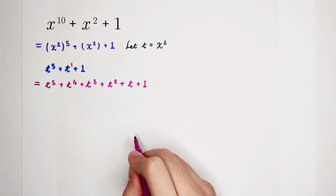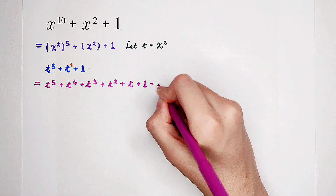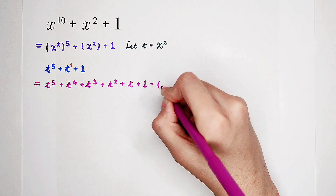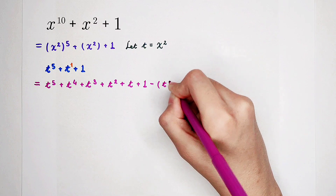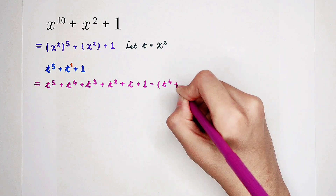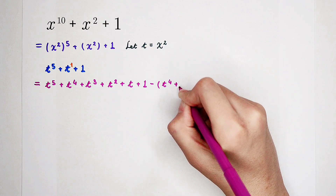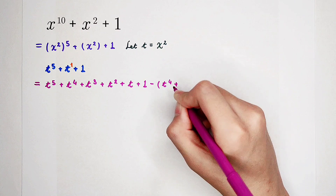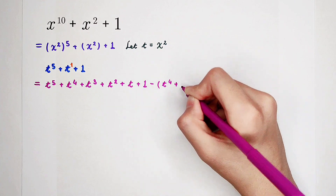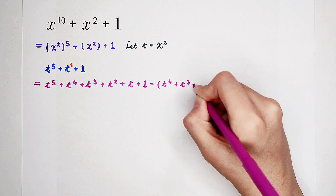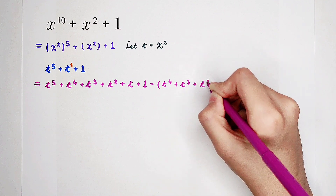You've added those terms, and then we should subtract them. Subtract t to the power of 4, then plus — why is it plus? Because we've added a bracket here — t cubed, and then plus t squared.